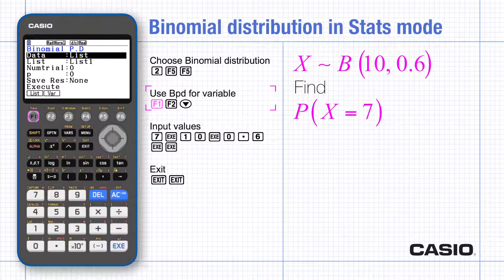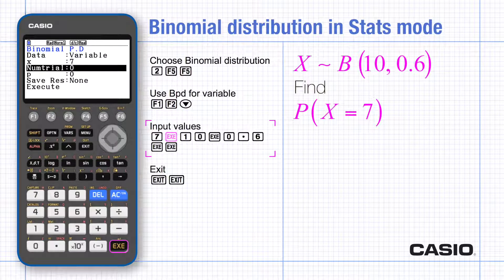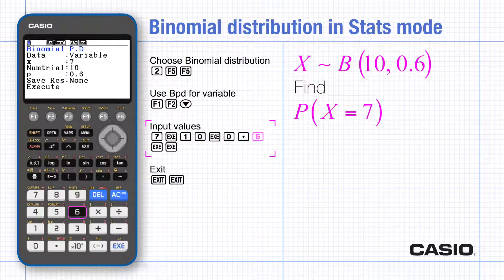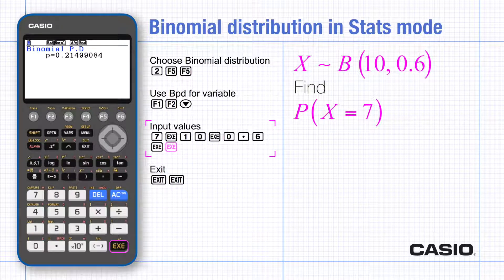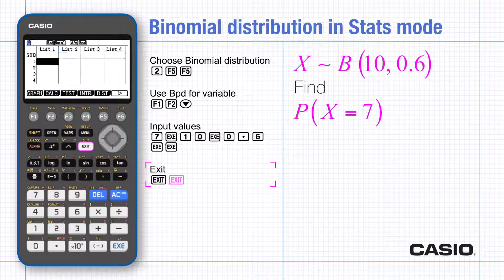Use F1 for BPD — this finds the probability of a single value. Set the data to variable, input 7 for X, 10 for the number of trials and 0.6 for the probability. Execute gives the answer to 8 decimal places. Press exit and go back through the menus ready for the next calculation.